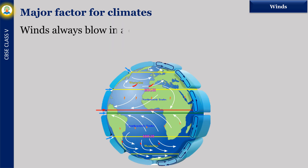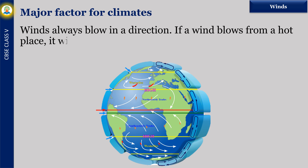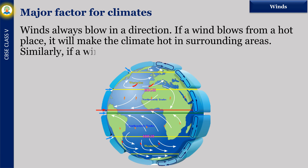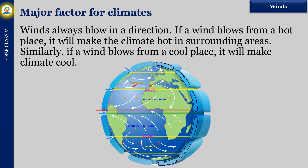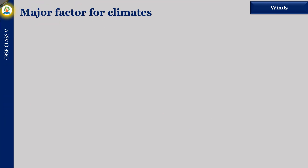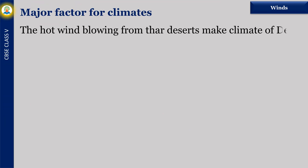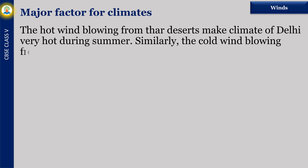Winds always blow from a direction. If a wind blows from a hot place, it will make the climate hot in surrounding areas. Similarly, if a wind blows from a cool place, it will make the climate cool. The hot wind blowing from the Thar Desert makes the climate of Delhi very hot during summer. Similarly, the cold wind blowing from Shimla makes the climate of Delhi very cold in winter.